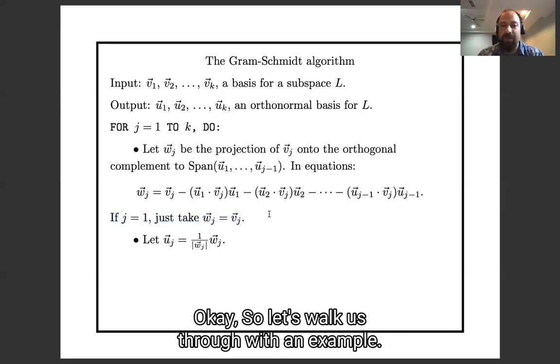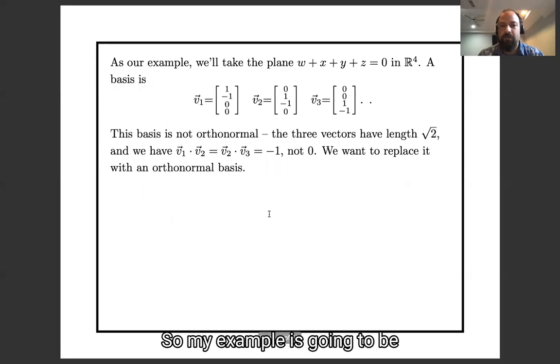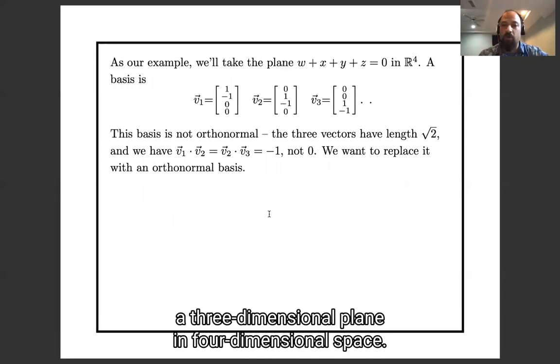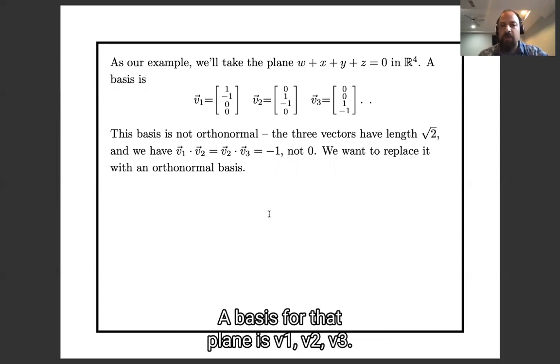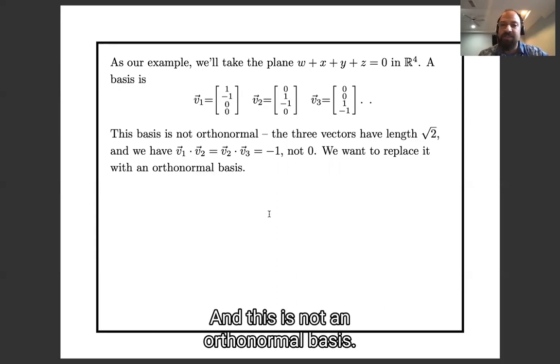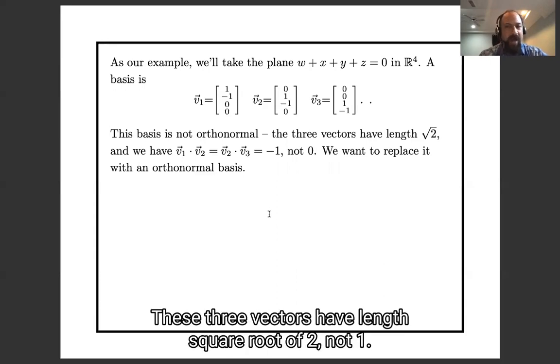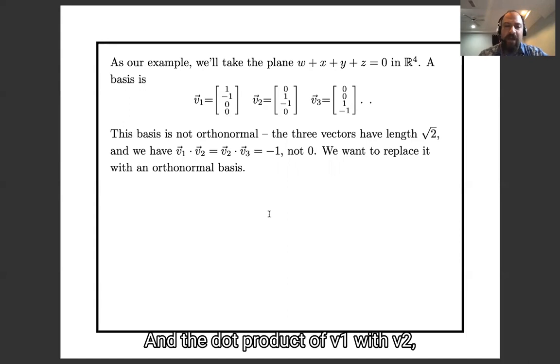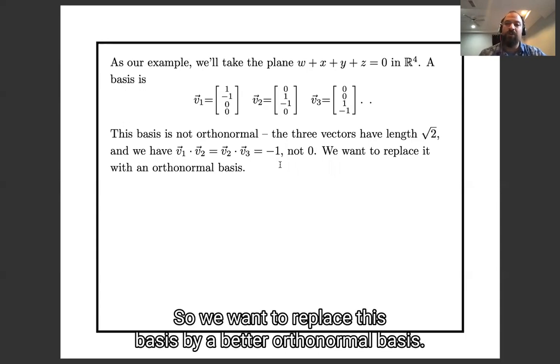Okay, so let's walk us through an example. So my example is going to be a three-dimensional plane in four-dimensional space. The basis for that plane is v1, v2, v3, these three vectors you see here. And this is not an orthonormal basis. These three vectors have length the square root of 2, not 1. And the dot product of v1 with v2, or v2 with v3, is negative 1, not 0. So we want to replace this basis by a better orthonormal basis.